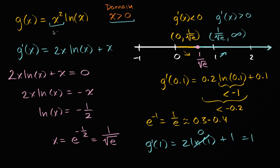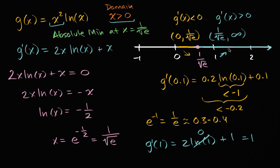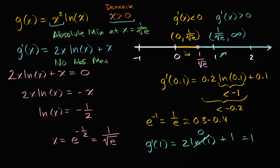So we have an absolute minimum at x equals one over the square root of e. And there is no absolute maximum. As we get above one over the square root of e, our function just keeps increasing forever. X squared grows unbounded towards infinity, and natural log of x also grows unbounded (though slower), so the function has no absolute maximum point.